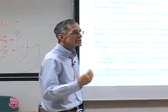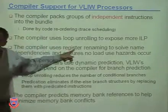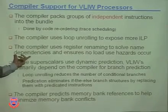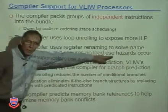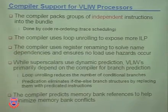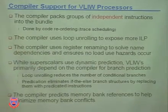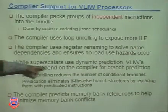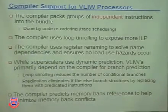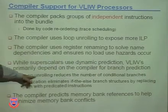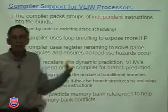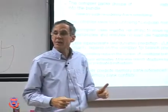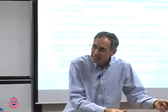Independent means they can be parallelized. The compiler also uses register renaming to solve name dependencies which aren't true data dependencies - they're just name dependencies. Ensure you don't get any load-use hazards. Superscalars use dynamic prediction. VLIWs - static multiple issue - primarily depend on the compiler for branch prediction, not hardware. Loop unrolling reduces the number of branches. We reduced our branches from four to one by unrolling by a factor of four. Fewer branches means fewer predictions required, and therefore less chance of misprediction.